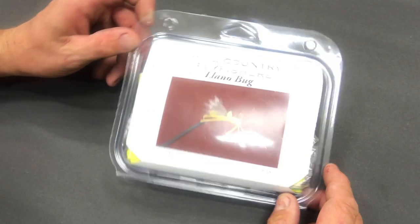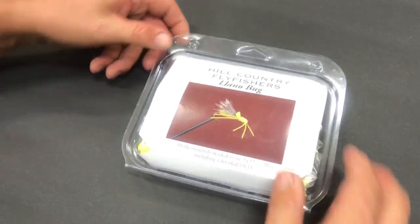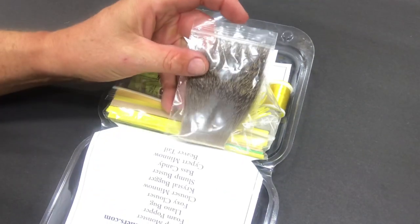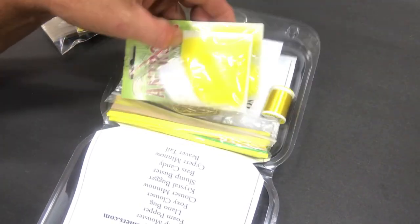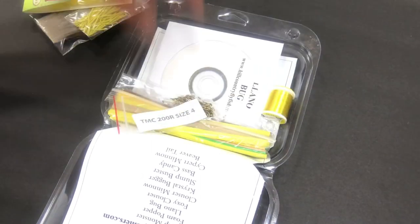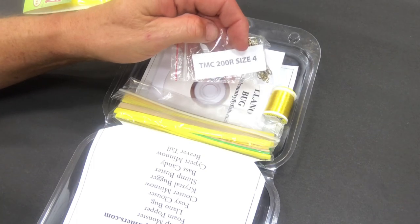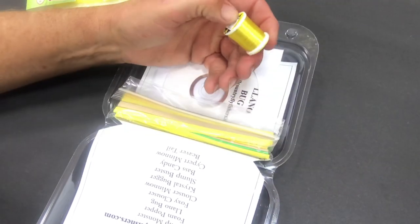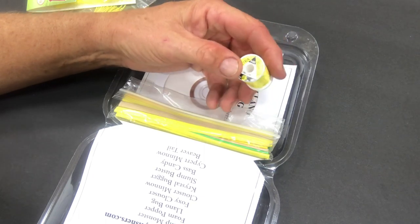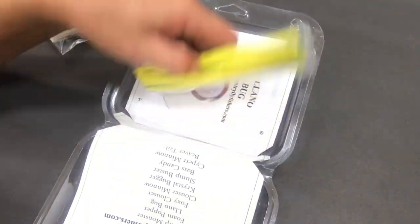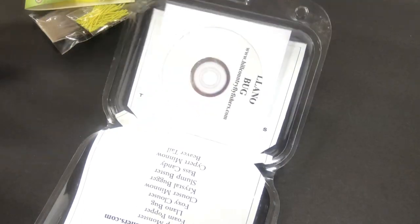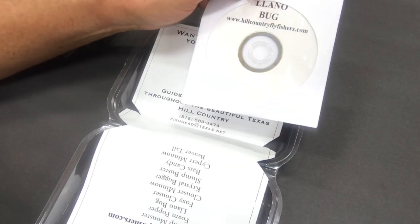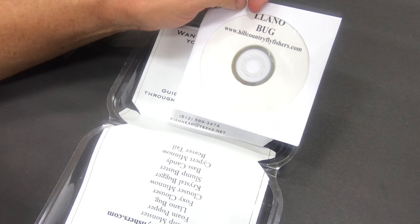This is the Lanobug kit that I sell. Let me show you what's all inside. We have deer hair for the wing, rubber legs, some yellow Antron dubbing, 24 TMC 200R number four hooks, some UTC 140 yellow thread, some different two millimeter quarter inch wide foam strips, and every kit comes with a video. That's all the stuff you need.